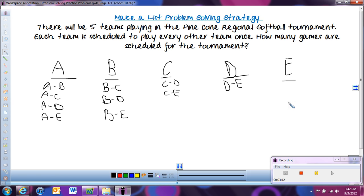So now all we need to do is add up all those games to figure out the total number of games for the tournament. So here we have 4 plus 3 plus 2 plus 1, and nothing's in that last one. So 4 plus 3 will give us 7, 7 plus 2 is 9, 9 plus 1 equals 10. So there are going to be 10 total games in this tournament.